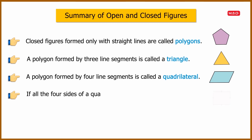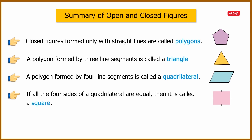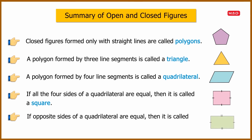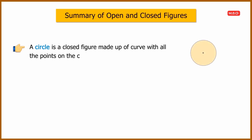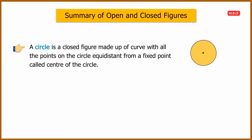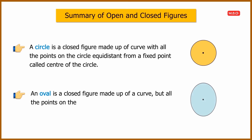If all four sides of a quadrilateral are equal, it is called a square. If opposite sides of a quadrilateral are equal, it is called a rectangle. A circle is a closed figure made up of a curve, with all points on the circle equidistant from a fixed point called the center. An oval is a closed figure made up of a curve, but all the points on the oval are not equidistant from the center.